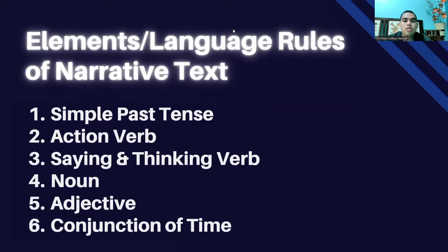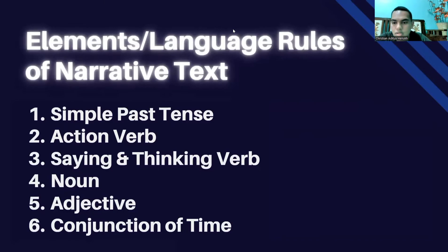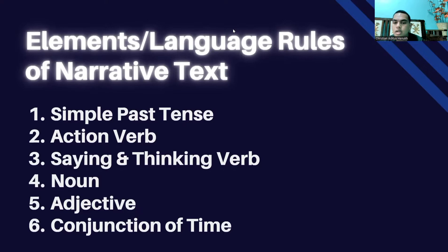Next are the language rules of narrative text. Number one, we have simple past tense. Simple past tense is used to tell past events. The most commonly used tense in narrative text is the past tense, with the verb changing to its second form. Number two, we have action verbs. Action verbs are a type of verb used to express an action or activity that is visible and can be seen by others. Action verbs are commonly used in narrative text to tell chronologically what events and activities are carried out by the characters.